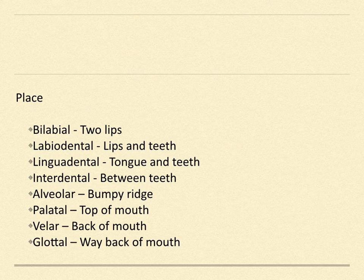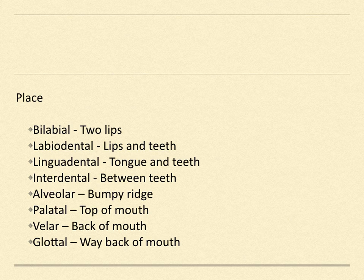When we talk about place, here we see the list of the different places of articulation. Bilabial is two lips — 'bi' meaning two and 'labial' meaning lips — and those are the sounds you make with your two lips together: B, P, and M are bilabial sounds. Going down the list, we've got labiodental, which is lips and teeth — 'labio' being lips, 'dental' being teeth. We'll have a chart coming up with the specific sounds for each.